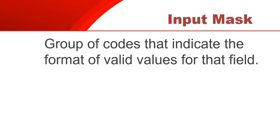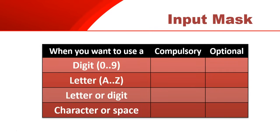If there's a specific format for what must go into a particular field and we want to specify that, we can use special codes to say this is what it must look like. There are two scenarios with most of the codes: there's a scenario when they must have that particular value (compulsory), and one where it could have that value but could be blank (optional).